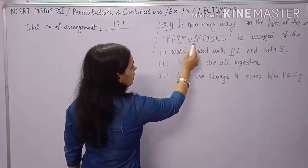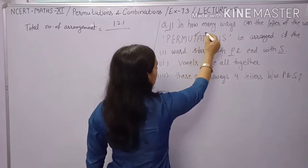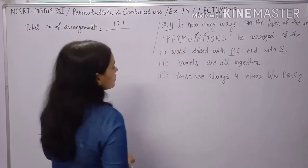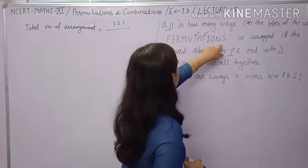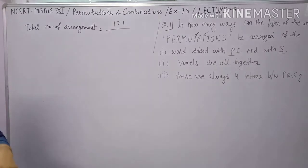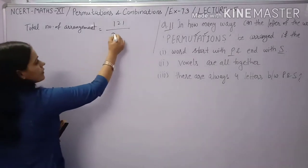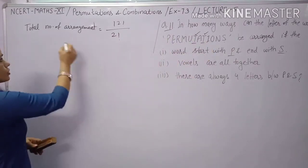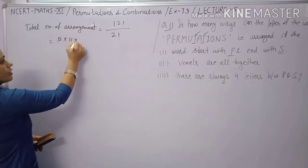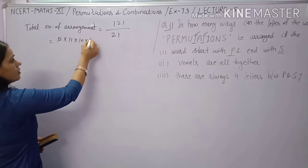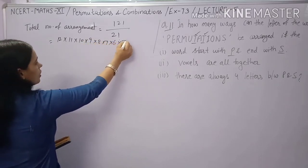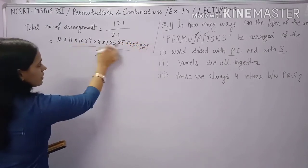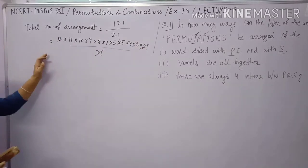First condition: words that start with P and end with S. The first place is fixed as P (1 way) and the last place is fixed as S (1 way). The remaining 10 letters include T repeated twice, so their arrangements = 10! / 2!. Total = 10! / 2!.